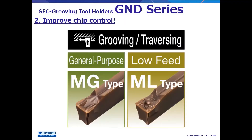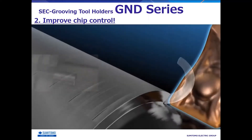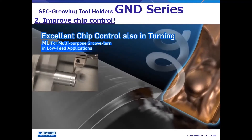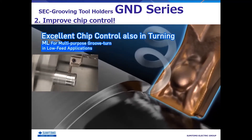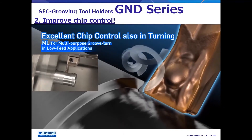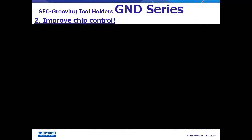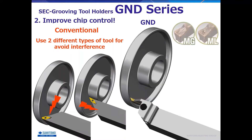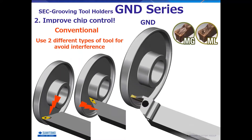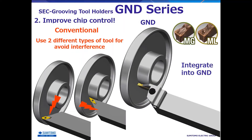The MG type and ML type chip breakers support not only grooving but also outer diameter turning. With a spherical chip breaker, the ML type exhibits outstanding chip control even in low-feed outer diameter turning. With these chip breakers, several tools can be integrated into a single GND tool even when they are separated to avoid interference.